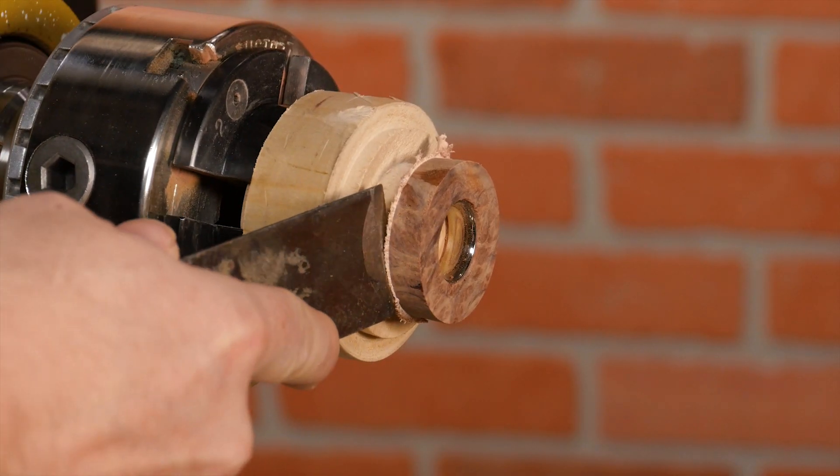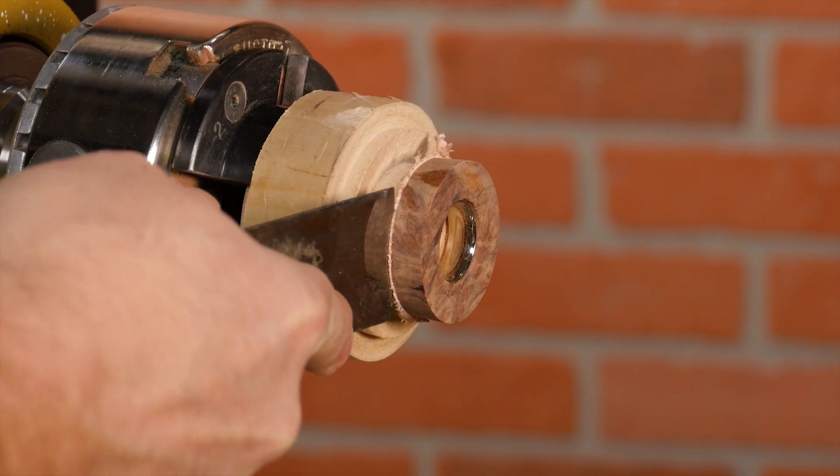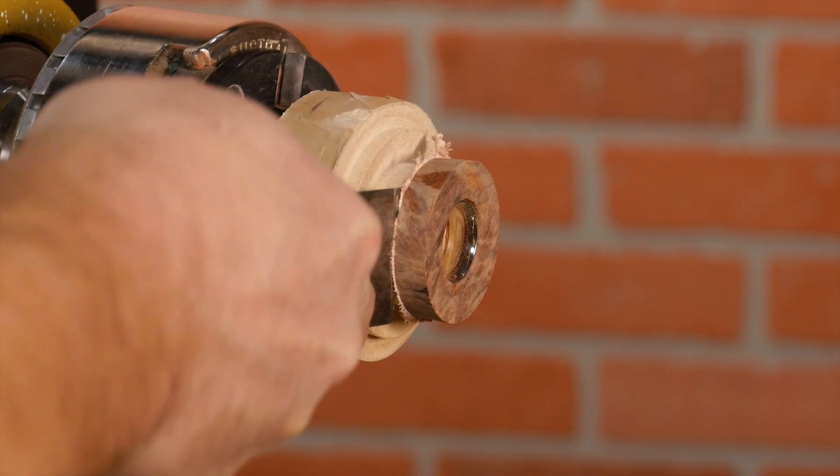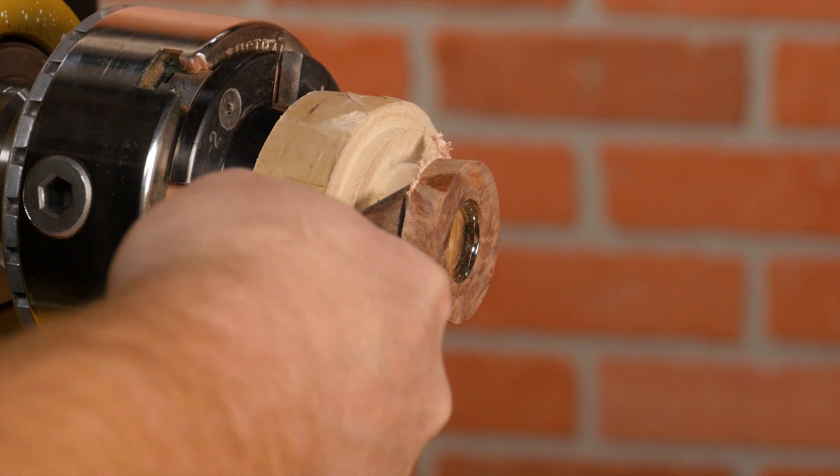After turning, carefully peel the blank away from the waste block with a putty knife. I like to keep the core in for this process for extra support. Use slow, steady pressure so the blank doesn't split.